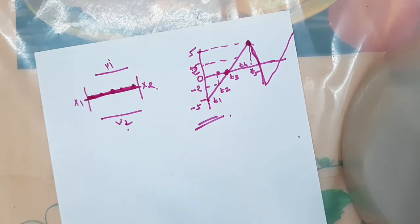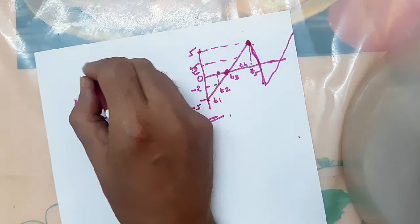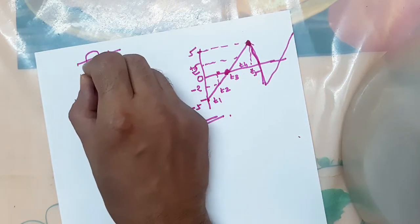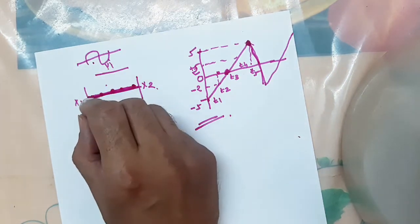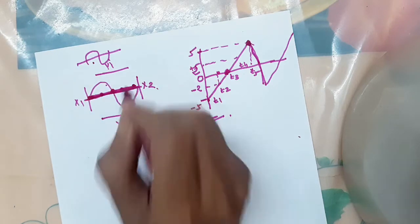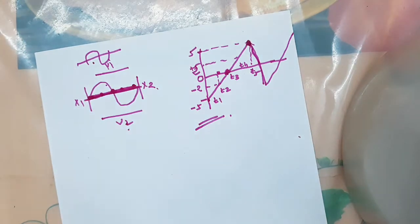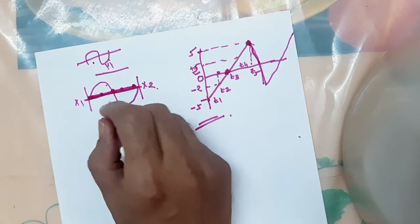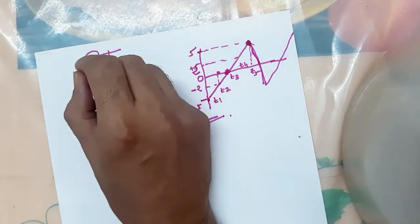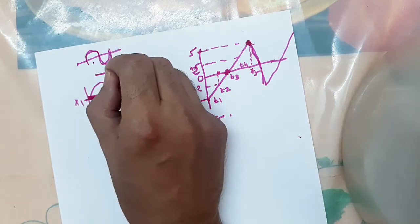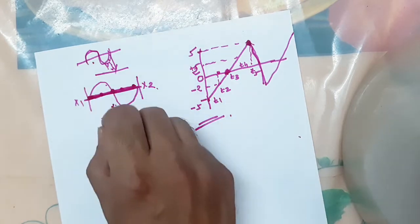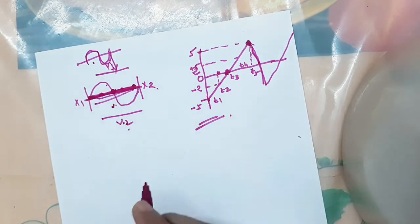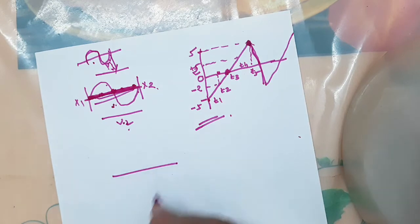Now we are discussing what happens when we apply sine wave — if we want to see a sine wave on the screen of the CRO. Before that, we will see what happens when a sine wave is given to the y-axis and no voltage is given to the x-axis. This is our screen.